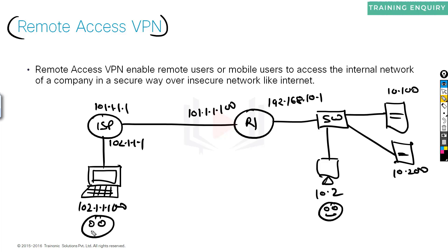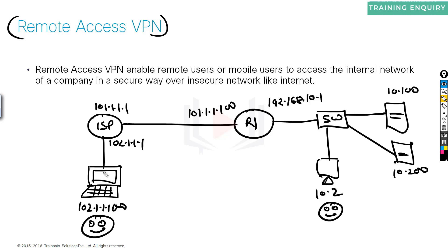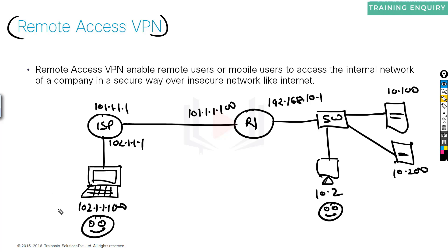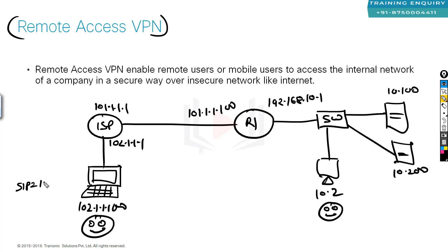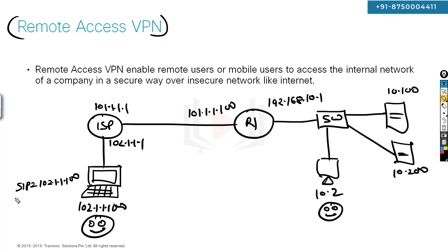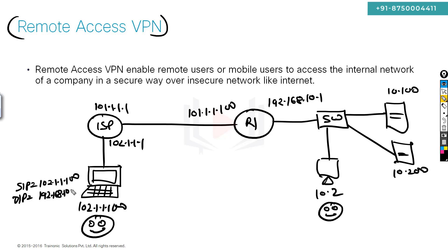This user is at his or her home, and from home they want to access the internal resources. So what will they do? This user will connect their laptop with the internet. When the laptop connects to the internet, its IP address is 102.1.1.100. It will generate a packet with source IP 102.1.1.100 and destination IP 192.168.10.100.